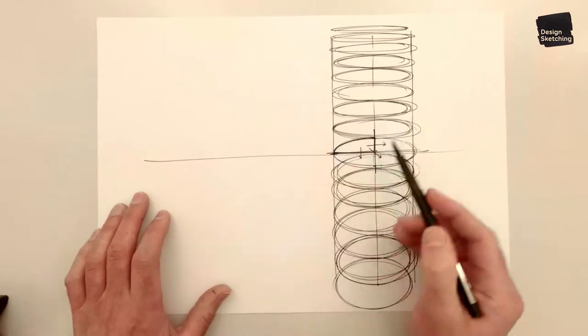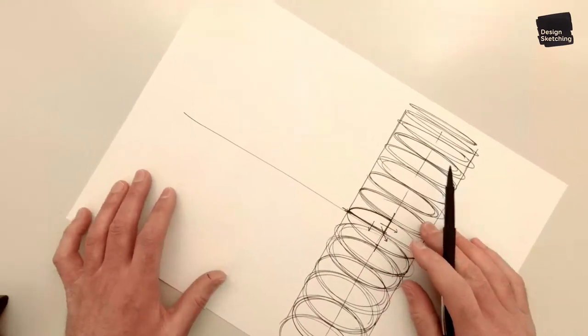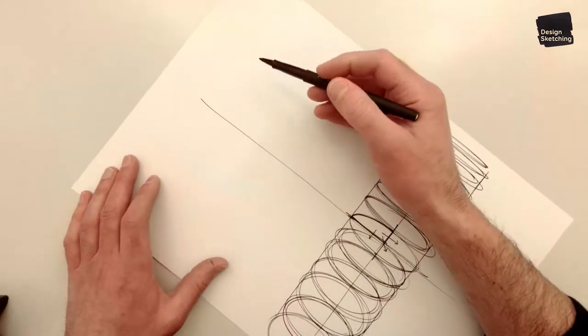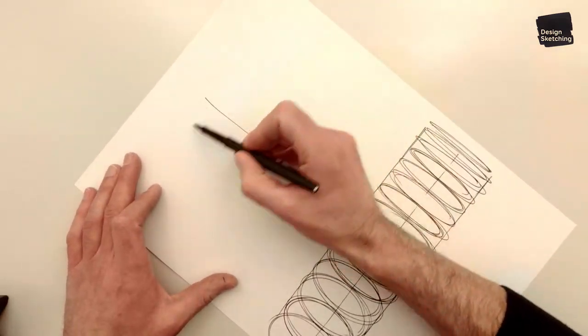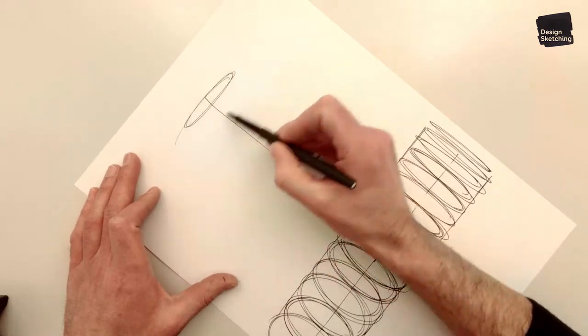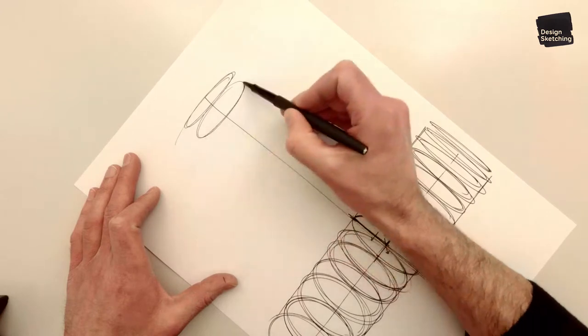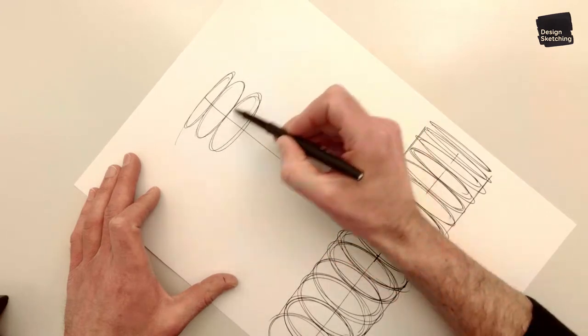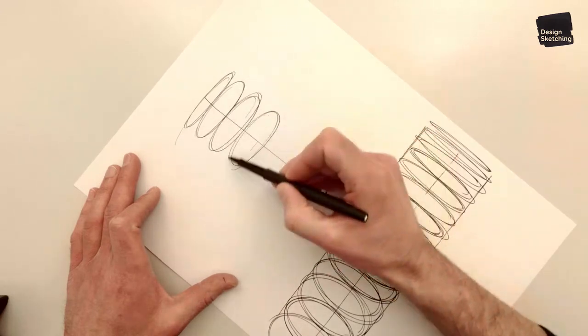Next, rotate the page a bit to the left and try and do the same in this direction. So here's a narrow ellipse and we're going to make them wider as we move to the right of the page.